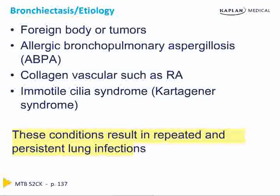The bottom line is that all of the above-mentioned conditions result in repeated and persistent lung infections. These repeated and persistent lung infections cause destruction of the large airways, which results in their remodeling into larger and more dilated airways. Any condition that causes repeated and persistent lung infections can cause bronchiectasis.